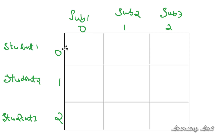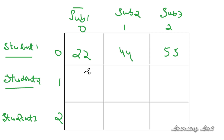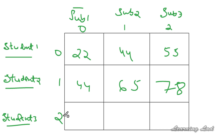I have created a table. In these rows, we are going to store the marks of the students. We are going to store the marks of the first student in the first row — let's say 22, 44, or 55. The first column is going to be for Subject 1, the second column for Subject 2, and the third for Subject 3. In the second row, I am going to store the marks of Student 2: 44, 65, 78. And in the third row, the marks of Student 3: 48, 96, 100.